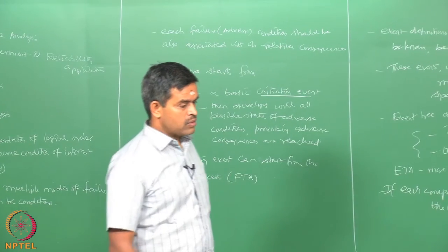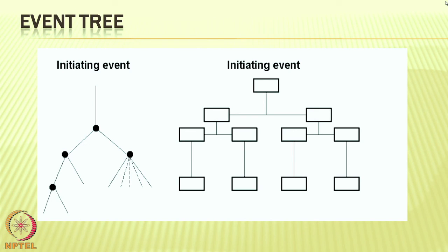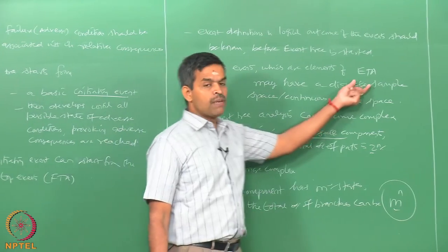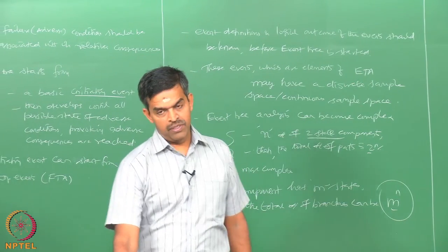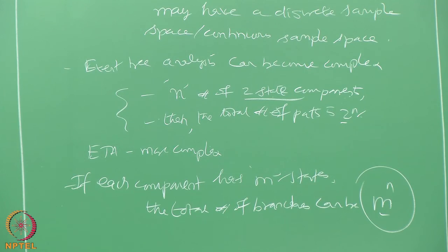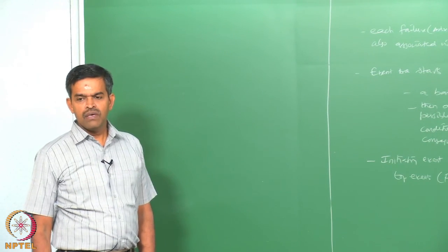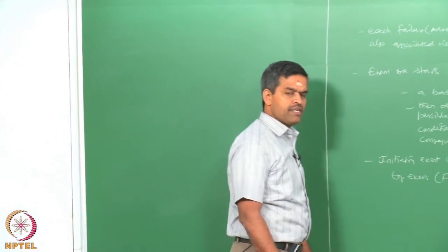Please pay attention to the figure shown on screen. The initiating event can be represented in two forms: either the one shown on the left-hand side or the one shown on the right-hand side. From the initiating event, one can keep on branching out, and every information of all elements participating in the event tree should be available. It can be derived from a discrete or continuous sample space, to understand the consequences or effects of every event on the overall failure of the system, which could be part of FTA or ETA analysis.